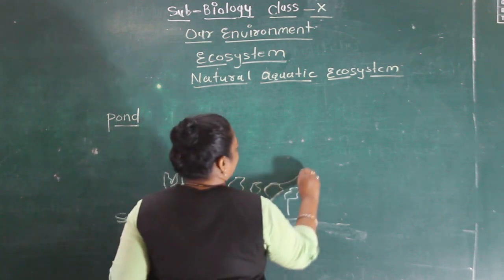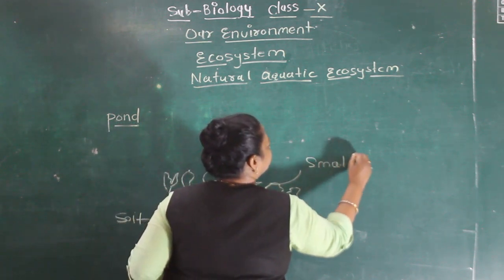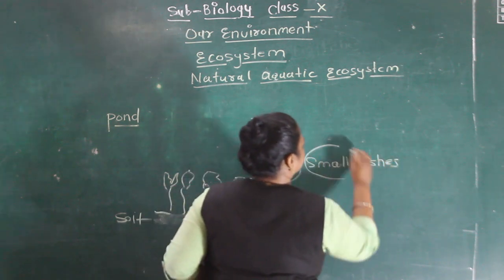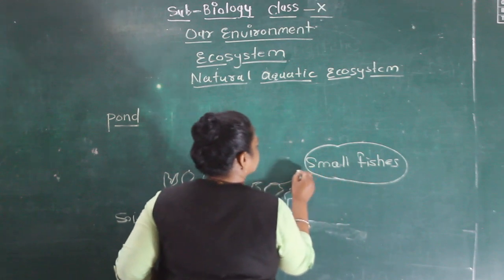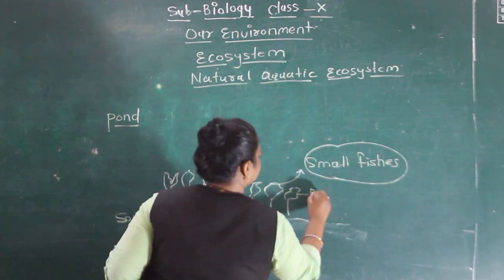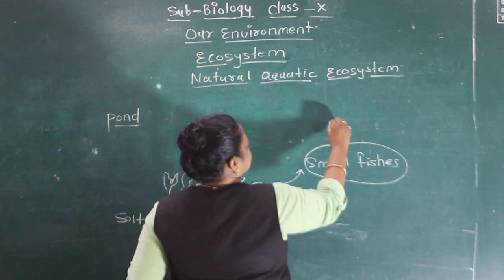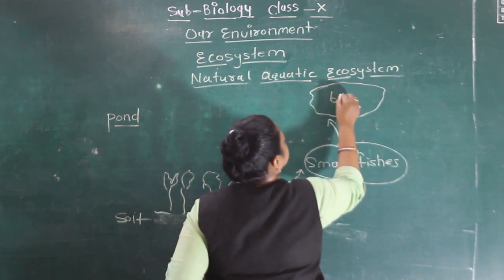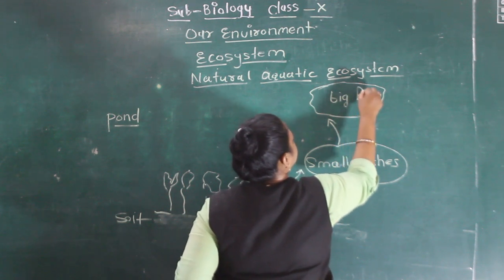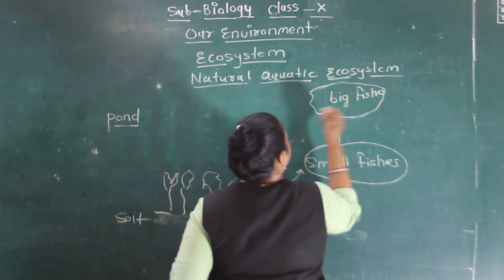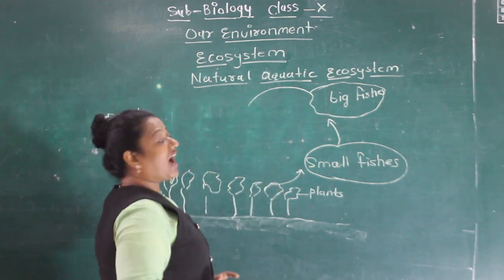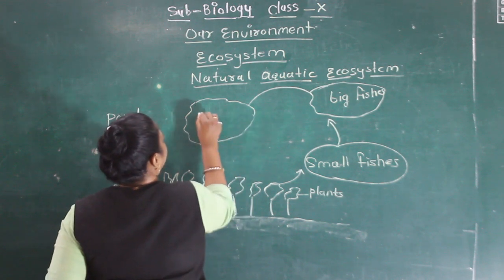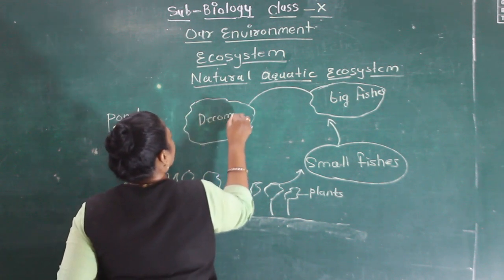These plants are eaten by a group of small fishes. These small fishes are eaten by a group of big fishes. And these big fishes are used by decomposers.